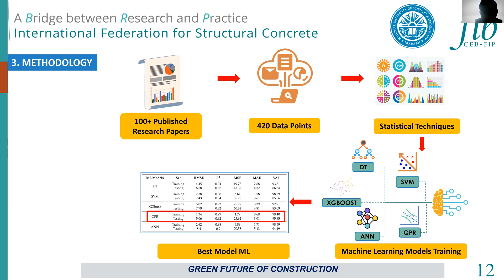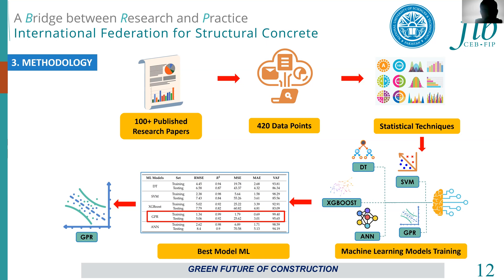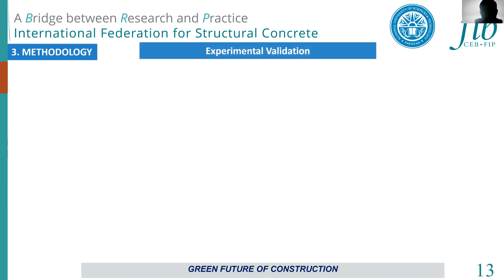Comparing these models, the Gaussian process regression model performed best, with an R-squared of 0.99 for training and 0.92 for testing. After development, these models were tested on an experimental dataset for validation.